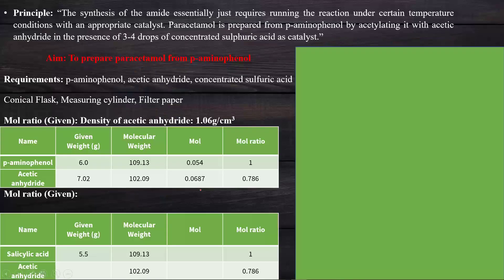Now we switch to the complete paracetamol synthesis. The principle is that the synthesis of the amide essentially just requires running the reaction under certain temperature conditions with appropriate catalyst. Here we use concentrated sulfuric acid as an acidic catalyst. Paracetamol is prepared from para-aminophenol by acetylating it with acetic anhydride in the presence of 3-4 drops of acid catalyst.